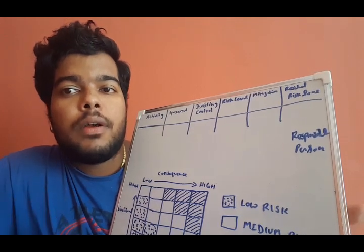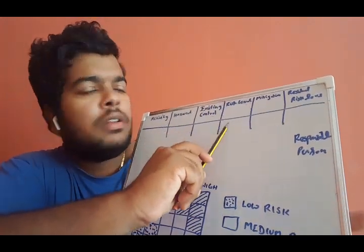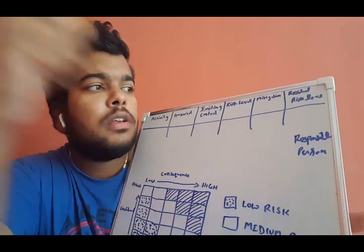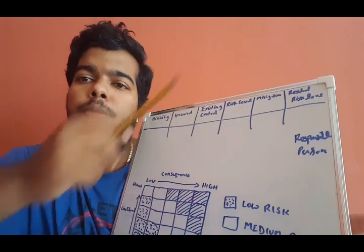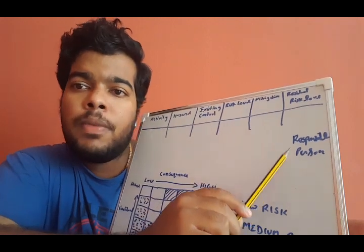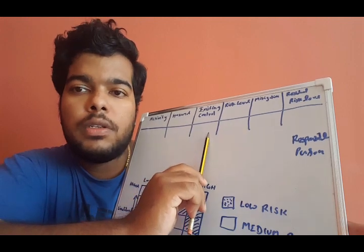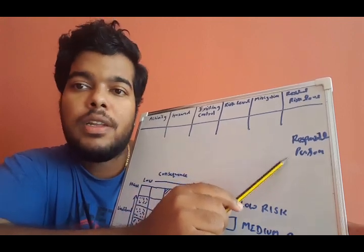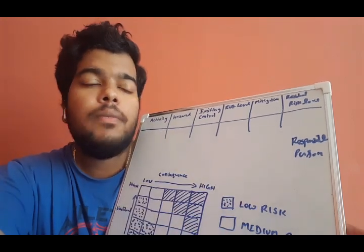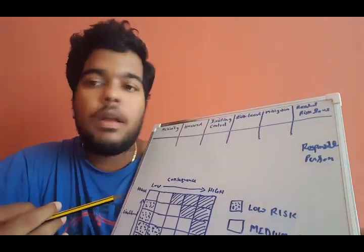And the residual risk, the residual risk and there is an initial risk level. After implementing the mitigation control, the remaining risk is known as the residual risk and it should be ALARP. That means as low as reasonably practicable and more important, responsible person. Responsible person is those guys who will be responsible for implementing those control measures. And my friend, this is an important section in the task risk assessment because if anything goes wrong in the activity, definitely this guy who is responsible for it will get caught. No one can get away with it.